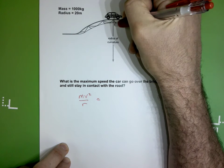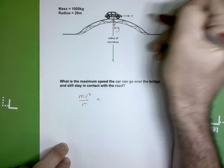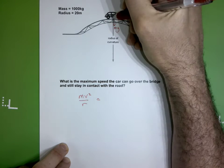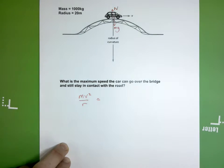The first thing you do is draw on two forces. There's the weight of the car acting downwards, mg, and you also put on the normal reaction from the surface of the road acting upwards, N.